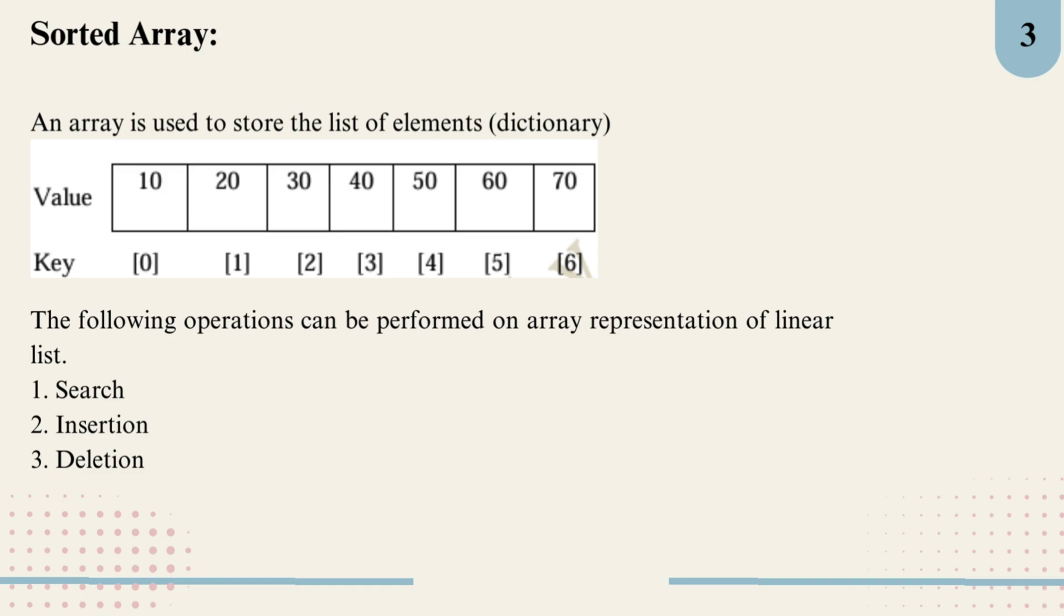Search: we can look up a specific key to quickly retrieve its value thanks to the sorted order of elements. Insertion: adding a new key-value pair to the array keeps the list in order, though it may involve shifting elements to maintain that sorted sequence. Finally deletion: removing a key-value pair from the array. Similar to insertion, it may require shifting other elements to keep everything in order. The sorted array is efficient for searching, but insertions and deletions can be a bit slower since elements need to be rearranged.